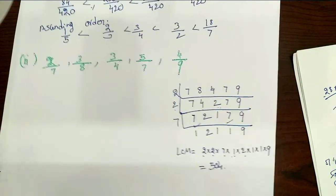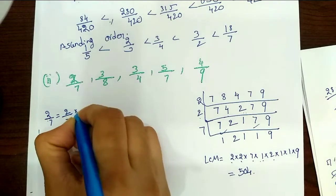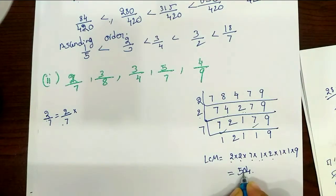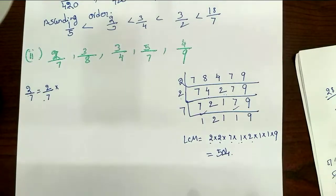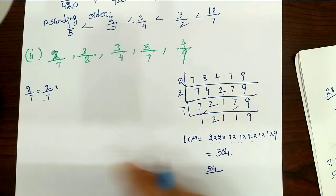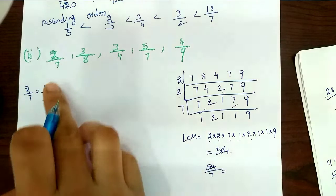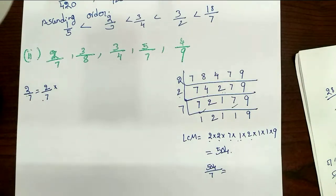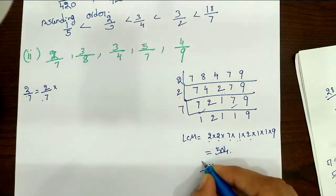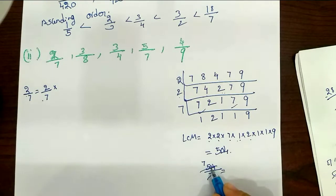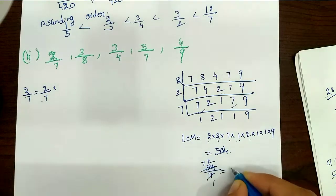The LCM is 504. The first fraction is 2 by 7. To convert, we use 504 as the common denominator and find equivalent fractions for each of 2 by 7, 3 by 8, 3 by 4, 5 by 7, and 4 by 9.